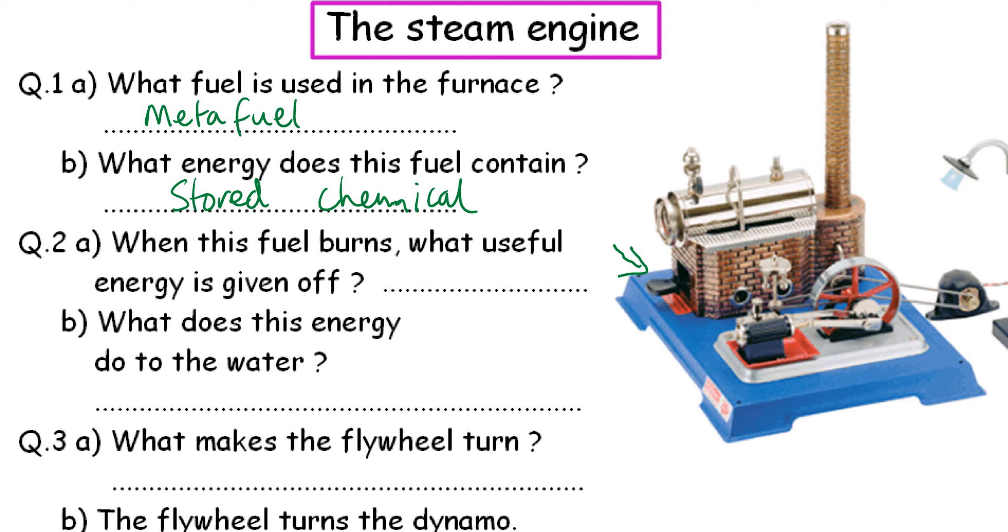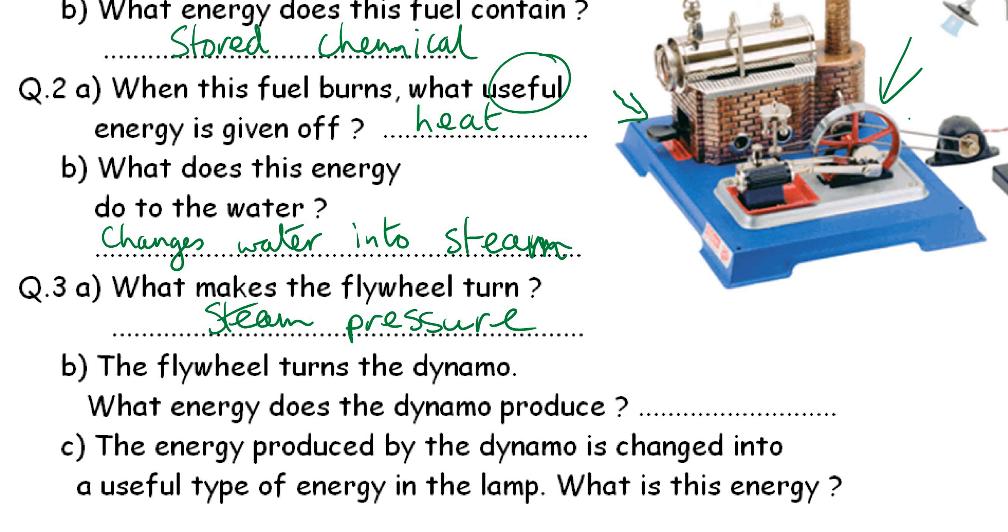Right then, when this fuel burns, what useful energy is given off? There's a lot of heat given off. There is some light, but it's the heat that is useful. What does this energy do to the water? It changes water into steam. What makes the flywheel turn? This is the flywheel here. It's because of the steam pressure. It forces the flywheel to start turning. The flywheel then turns the dynamo. What energy does the dynamo produce? That converts movement energy into electric energy.